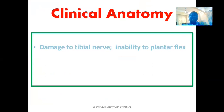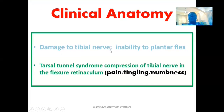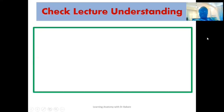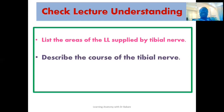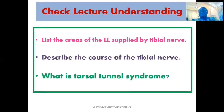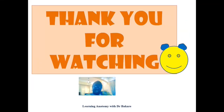Clinically, damage to the tibial nerve impairs plantar flexion since it innervates the posterior muscles of the leg. Tarsal tunnel syndrome is the compression of the tibial nerve within the flexor retinaculum, presenting with pain, tingling, and numbness. Review questions: list the areas of the lower limb supplied by the tibial nerve; describe the course of the tibial nerve; and define tarsal tunnel syndrome. Thanks for watching.